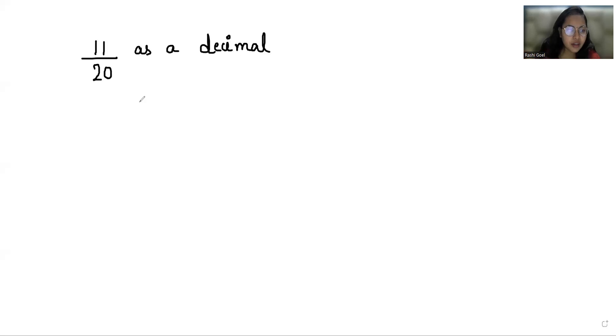So let's start. So 11 by 20, any number if you want to convert into decimal, you have to divide the numerator with denominator. So 20 into 11. So 11 is smaller than 20, so we'll take decimal 0 point.